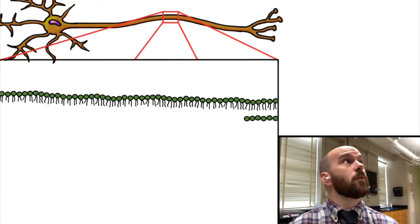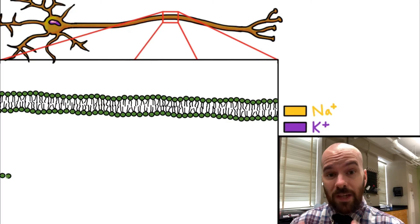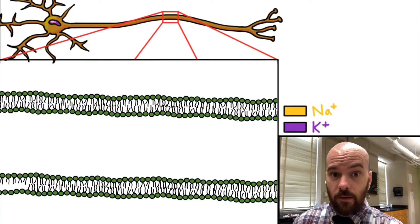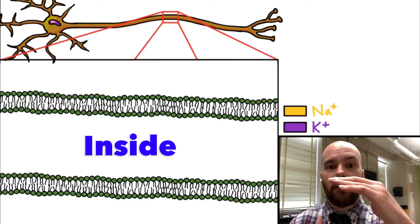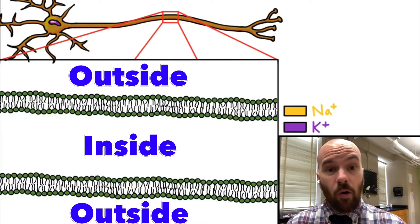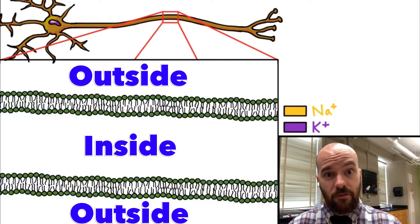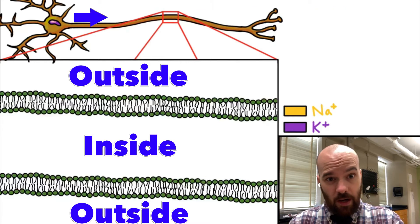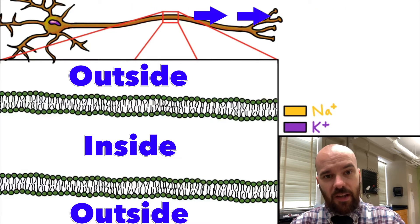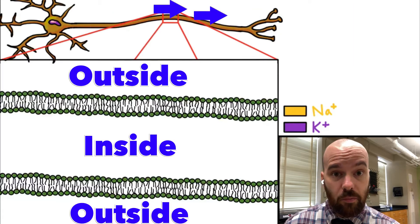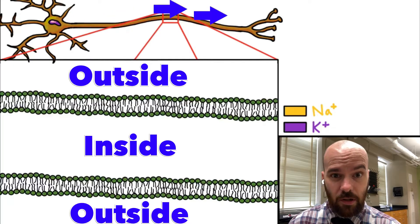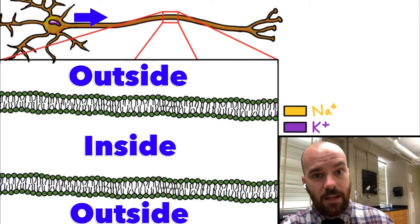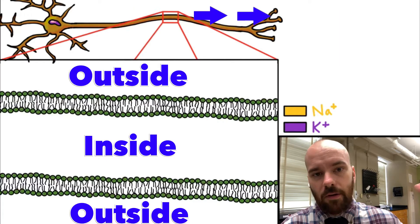Here we have a neuron, and we're going to zoom in to a piece of the axon on that neuron. You can see the cell membrane being drawn, with the inside and outside of that axon. This whole process of depolarization, repolarization, and refractory period happens as a sort of chain reaction down the length of the neuron. Each time depolarization happens, it triggers the next part of the neuron to depolarize as well, leading the signal to the axon terminals.